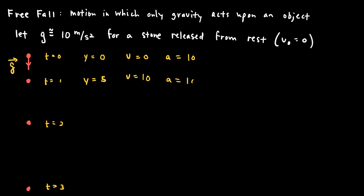The acceleration is still 10 m/s². Due to that acceleration, the velocity increases by another 10 meters per second in the next second, so v = 20 m/s. In this second interval, it starts at 10 and finishes at 20, so the average velocity is 15 m/s. Traveling at 15 m/s for one second covers an additional 15 meters. Since the object started at y = 5, that additional 15 meters puts the object at y = 20.